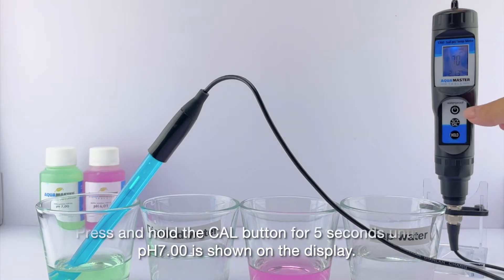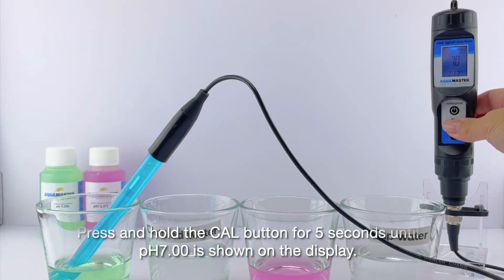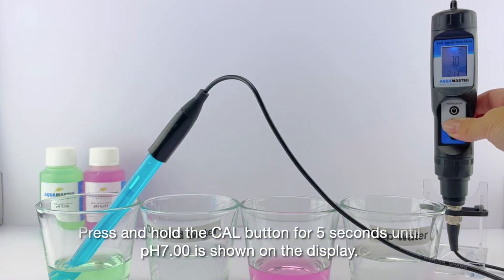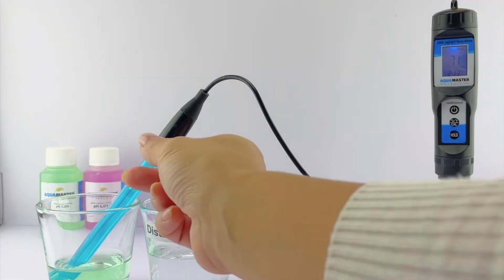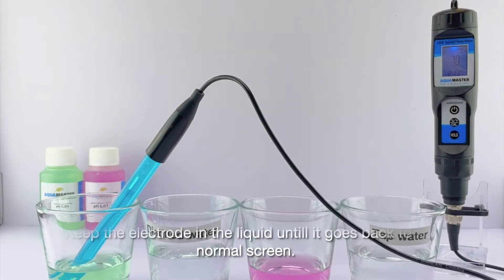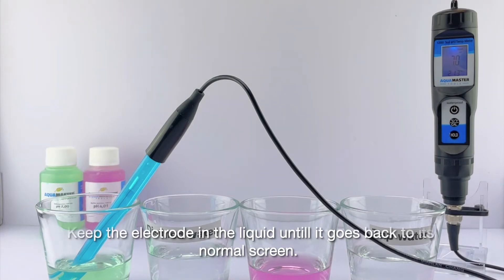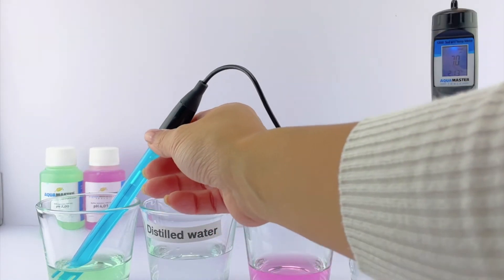Press and hold the calibration button for 5 seconds until pH 7.00 is shown on the display. Keep the electrode in the liquid until it goes back to its normal screen.